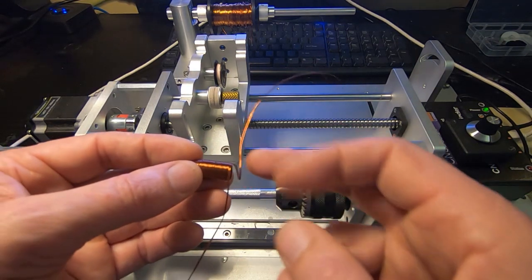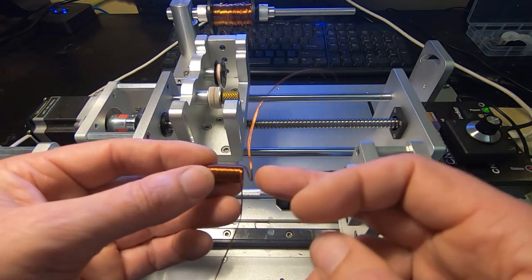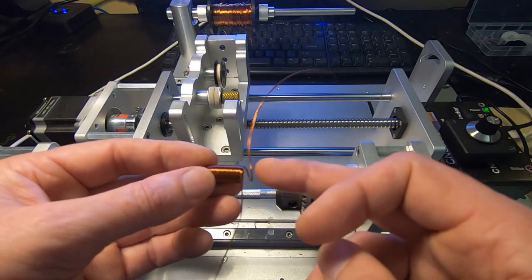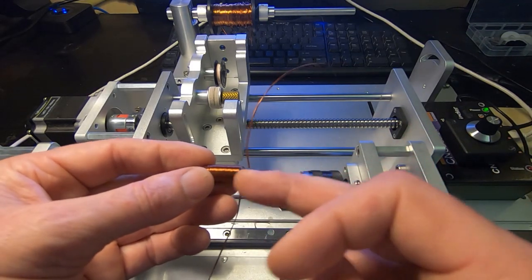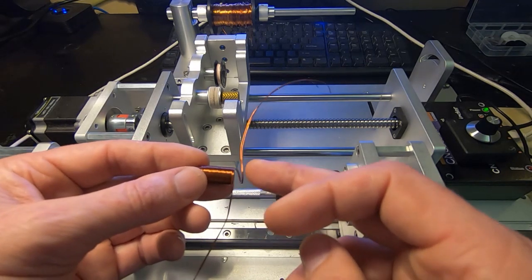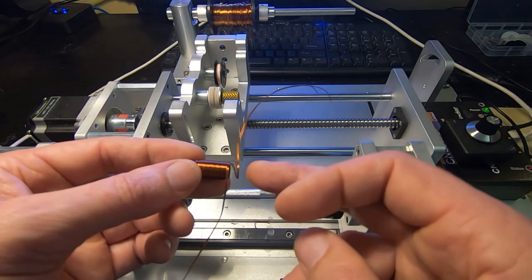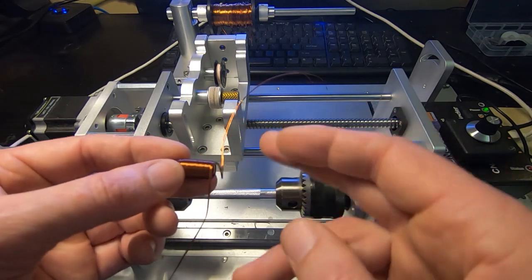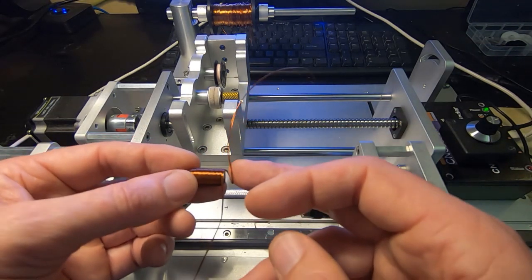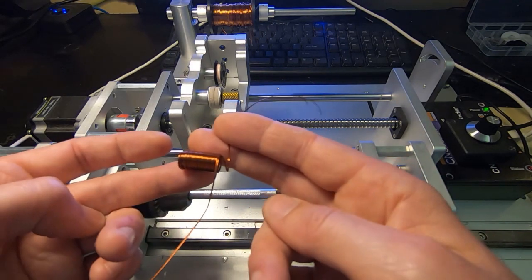So what you could do of course is wind the first coil halfway across the former and then wind the second. It's not quite as neat doing that, and also you might find that the two lengths of wire are not exactly the same, and so one of the windings might carry more of the load than the other one.